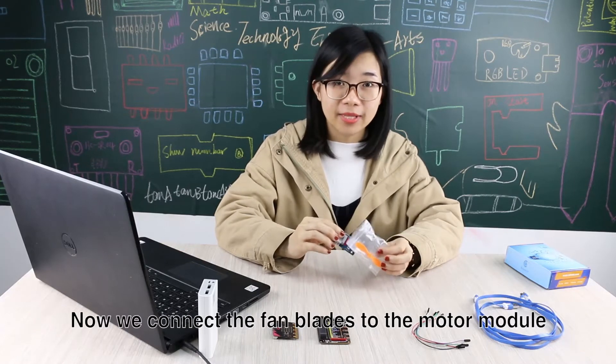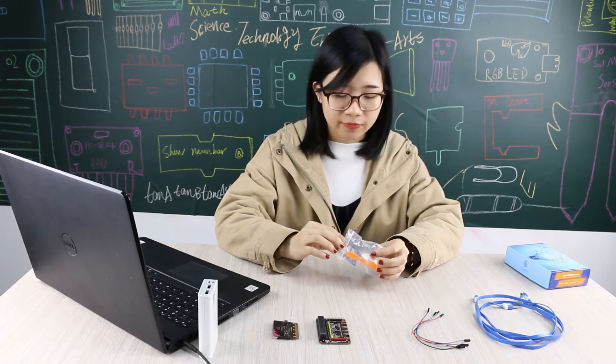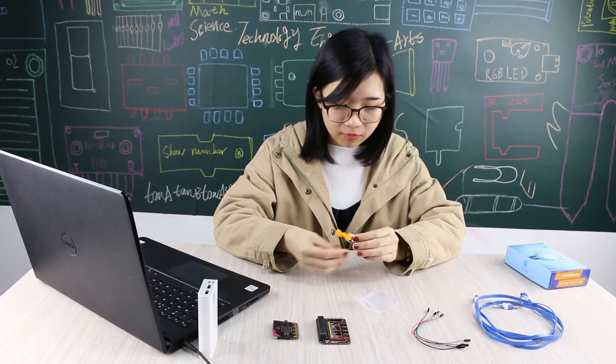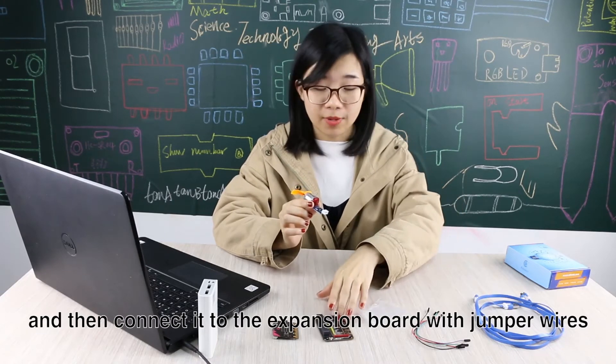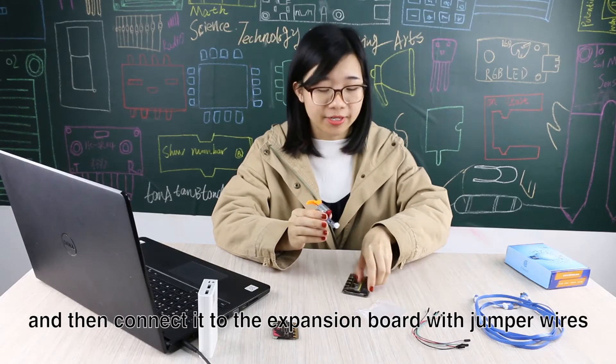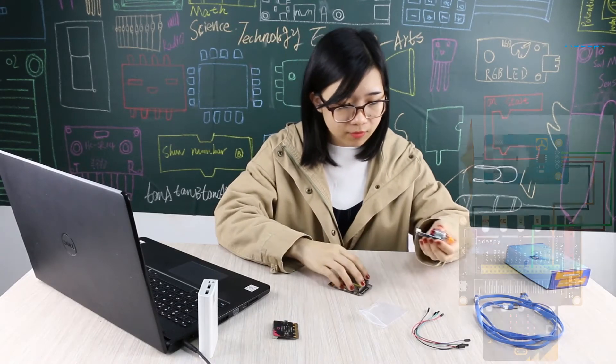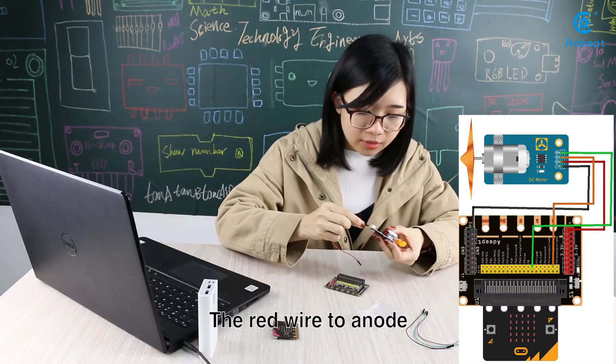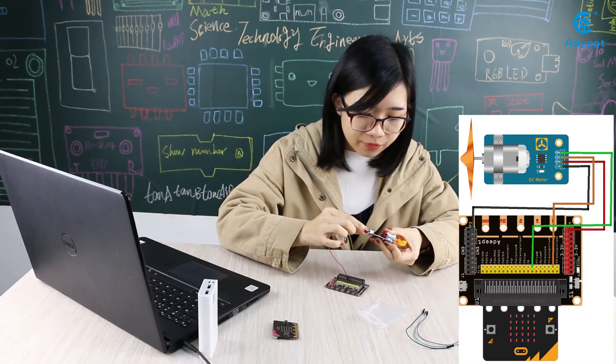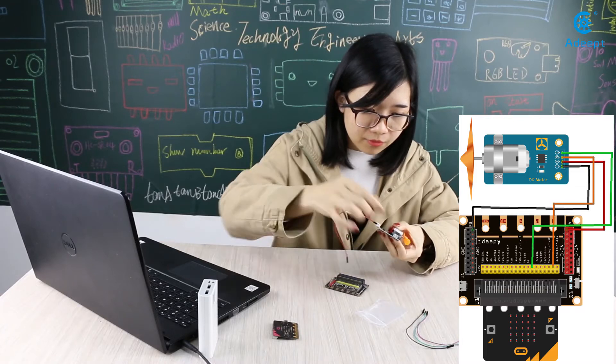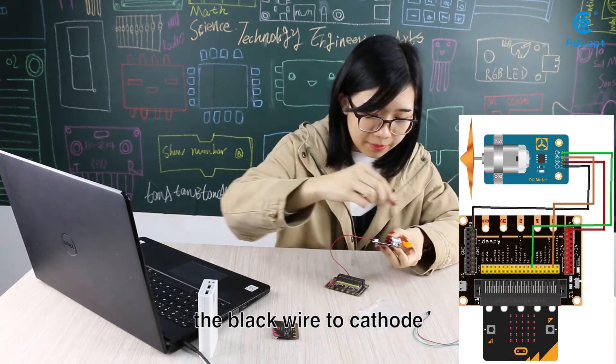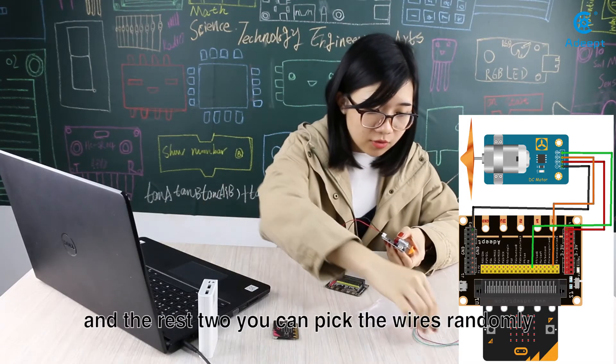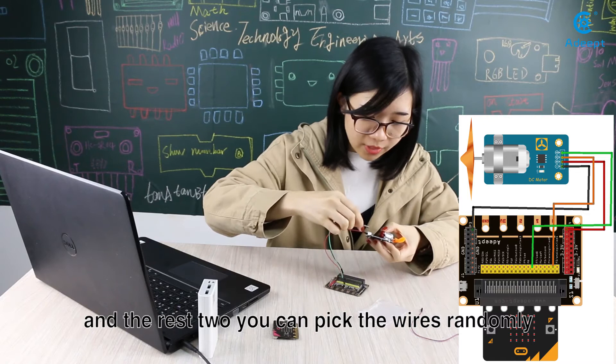Now we connect the fan blades to the motor module. And then connect it to the expansion board with the jumper wires. The red wire to anode, the black wire to cathode. And the rest you can pick randomly.